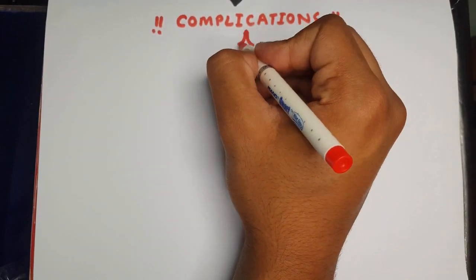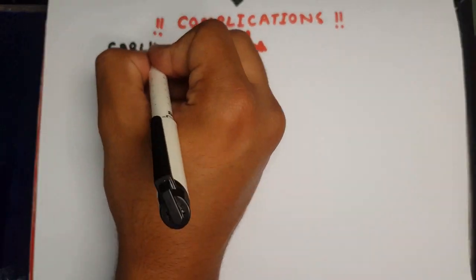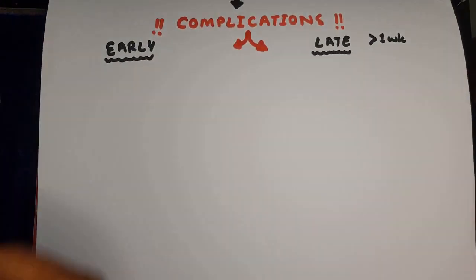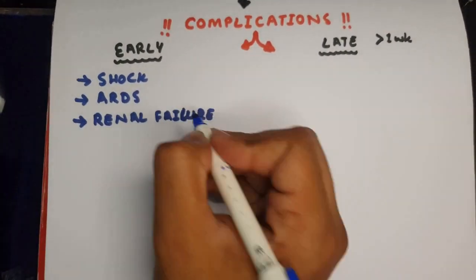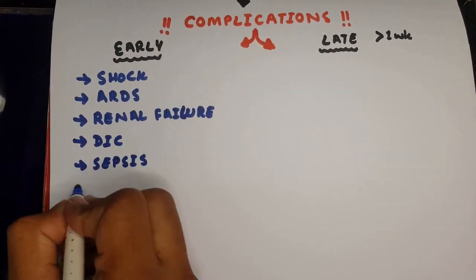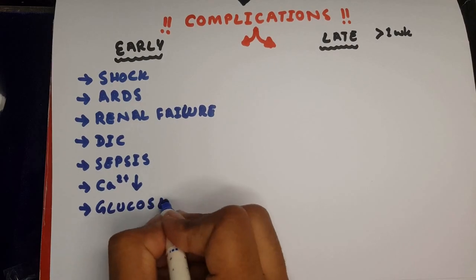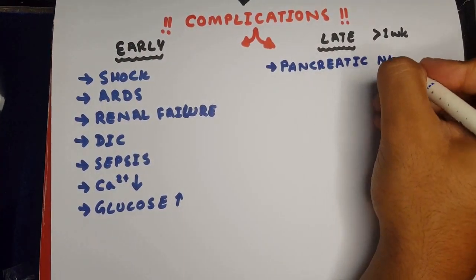The complications are divided into early or late complication, based on whether it was within one week or after. Early being shock, acute respiratory distress, renal failure, DIC, sepsis, hypocalcemia, and a transient glucose increase.